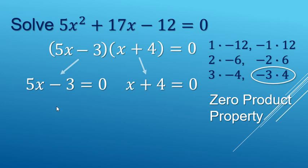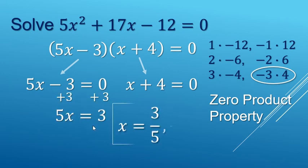Now for solving this one, you do got to go back to Algebra 1, add 3 to both sides, and then divide by 5, and you end up with 3 fifths from this factor here, and x equals a negative 4 from this factor here.